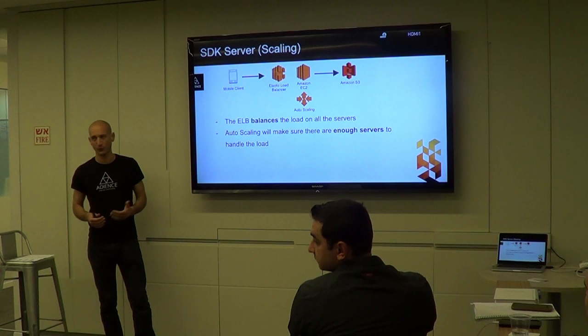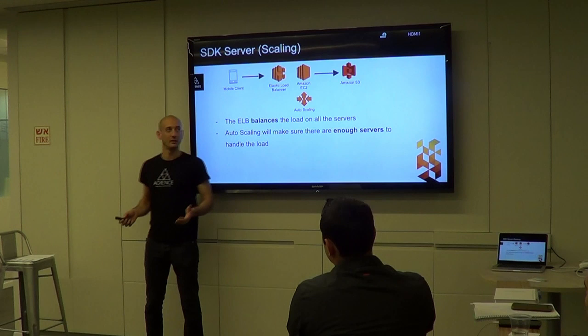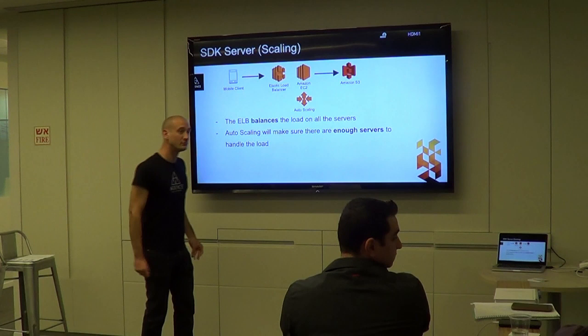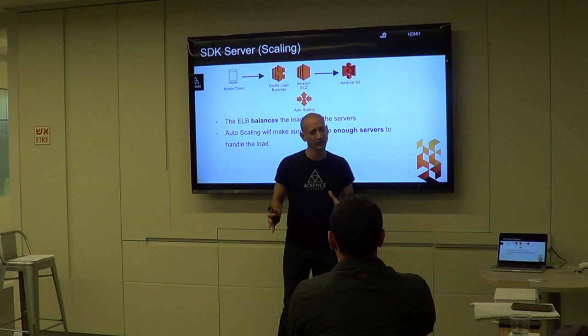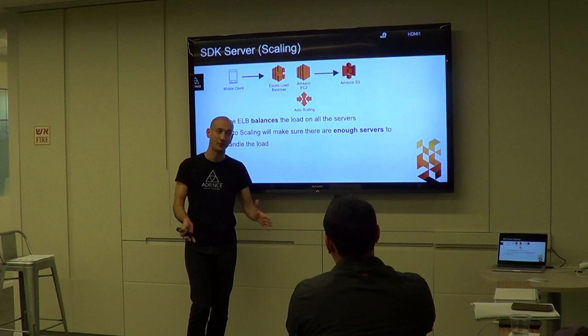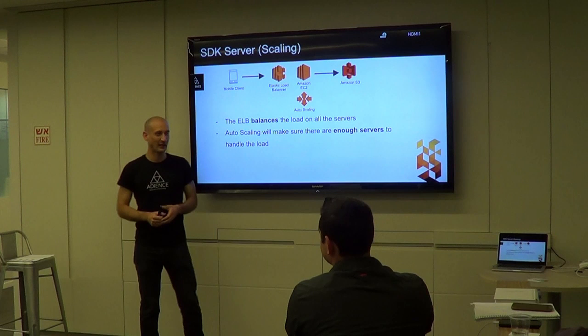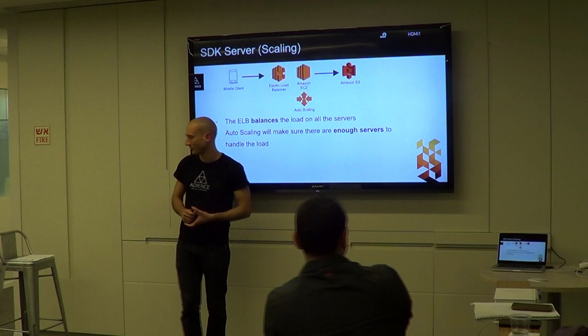We don't care if an instance goes down here - it's okay. A new instance will go up, connect to the load balancer, and get all the traffic. The key concern is how long it takes to come back up, which is why you should always maintain some redundancy. You don't want all instances running at 100% CPU and memory - you always want to keep some margin for error.